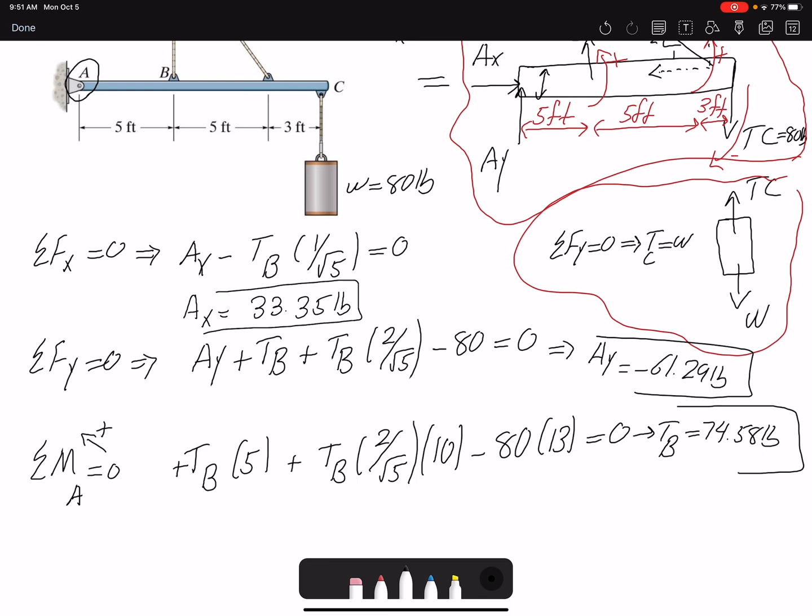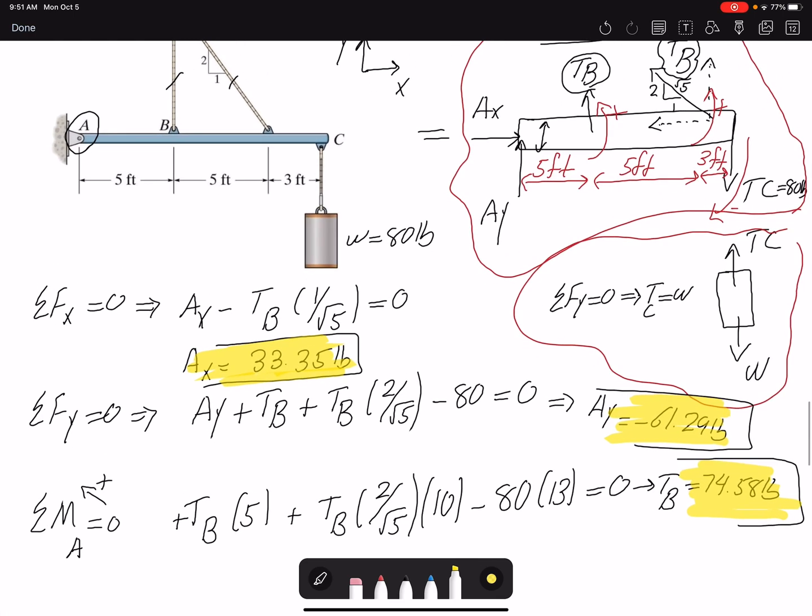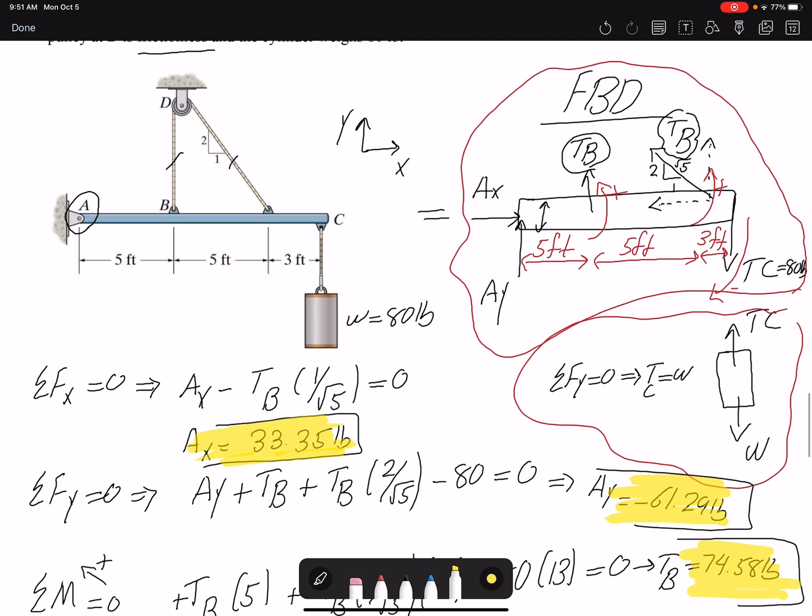So we had three unknowns: we found TB, Ay, and Ax. But if you pay attention, Ay is negative here, which means that the direction that we assumed is incorrect, and actually Ay is going downward. But we're not going to change our free body diagram and erase it and redraw it. The way we are representing here, Ay is going upward, the value is negative, which means that the actual value is going in the opposite direction of y.